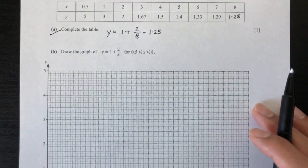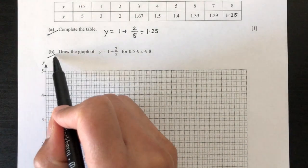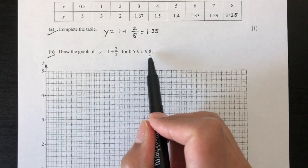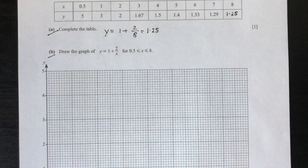Now, for part 2, we have to draw the graph of y = 1 + 2/x for 0.5 ≤ x ≤ 8. So let's do that.